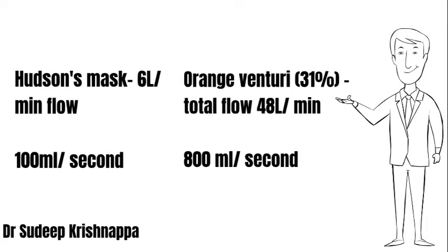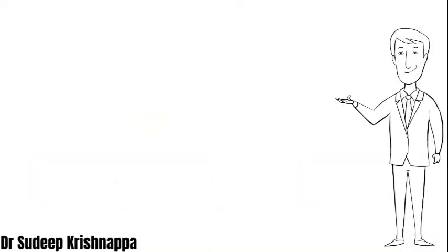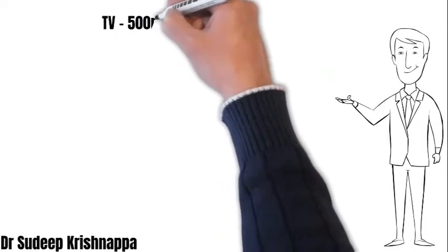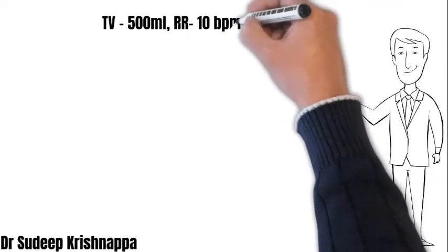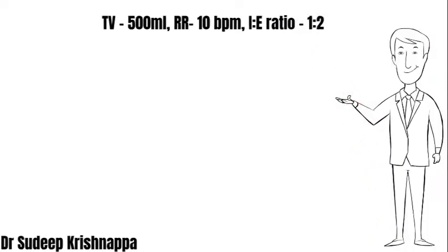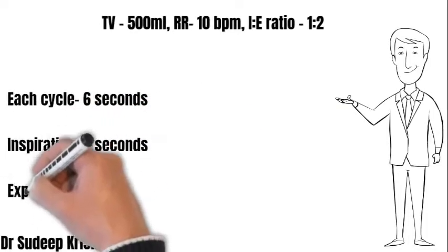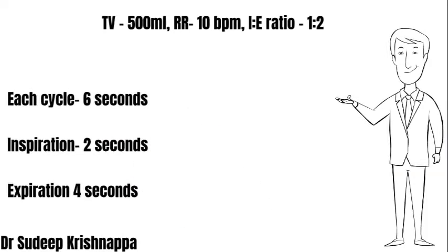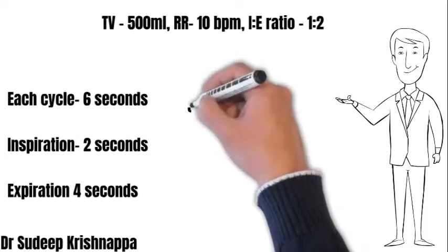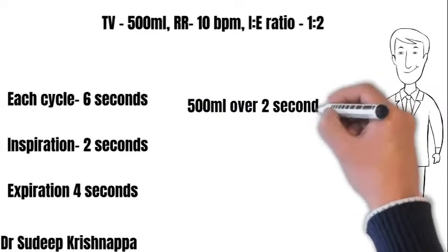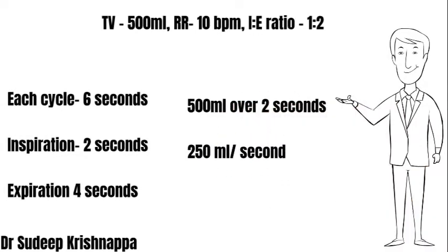The first scenario: a person breathing a tidal volume of 500 mL, respiratory rate of 10 breaths per minute, I:E ratio of 1:2. With 10 breaths per minute, each respiratory cycle is 6 seconds. With an I:E ratio of 1:2, the 6 seconds are divided in the ratio 1:2, giving an inspiratory duration of 2 seconds and expiratory duration of 4 seconds. With uniform inspiratory flow, the tidal volume of 500 mL flows in over 2 seconds, amounting to 250 mL per second.